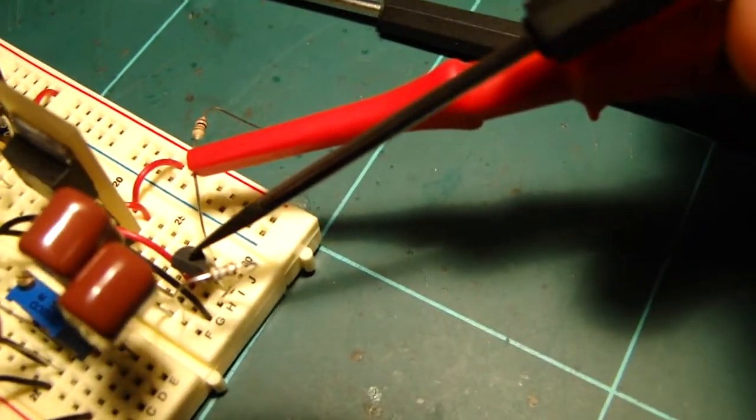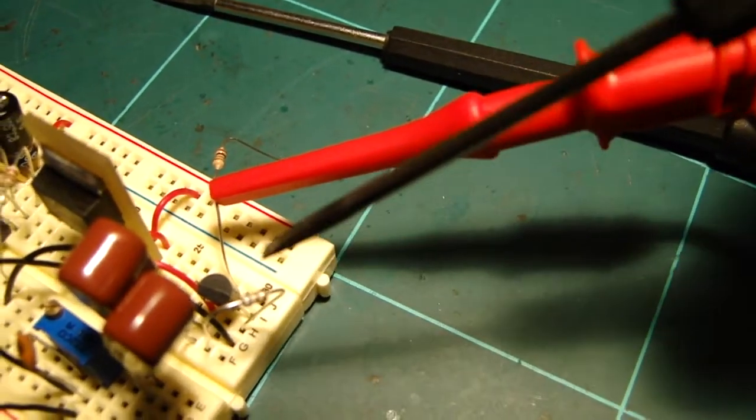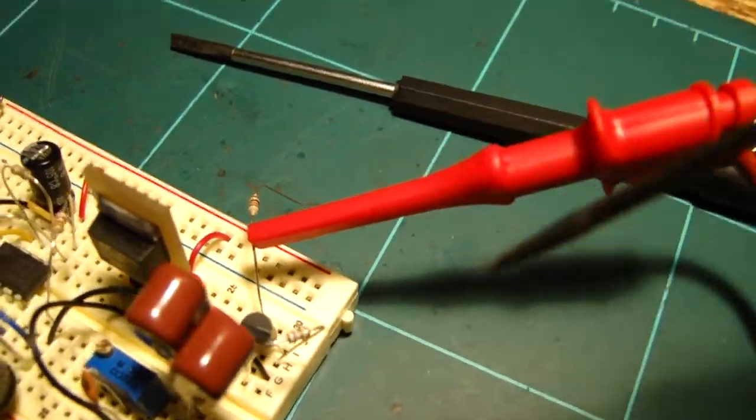An LM334 constant current source, and a set resistor for it, so it's running at about 1mA at the moment.